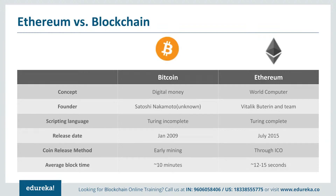The time taken for creating a block is also different. An average block in Bitcoin blockchain gets created every 10 minutes, whereas in Ethereum it's about 12 to 15 seconds. Also, the reward system differs: in Bitcoin it's about 12.5 Bitcoins, while in Ethereum it's only about 5 Ether.